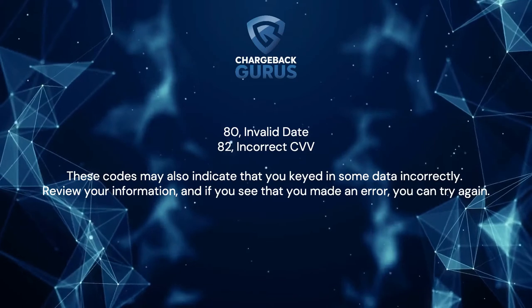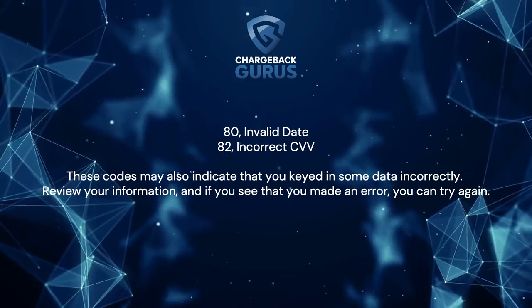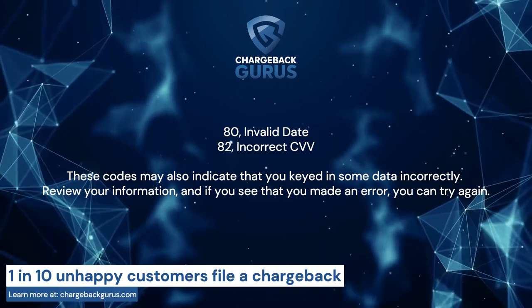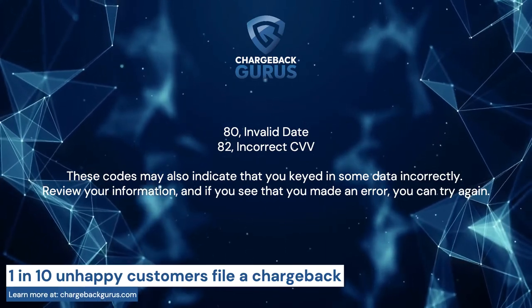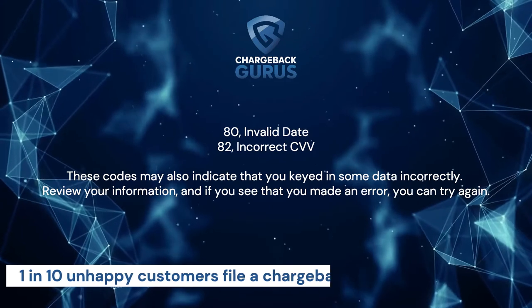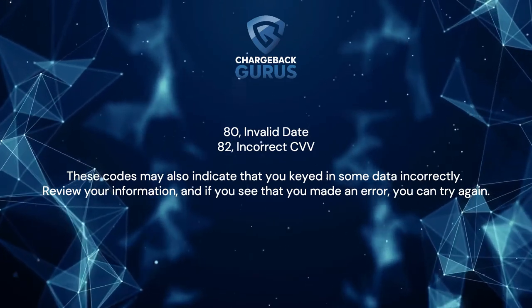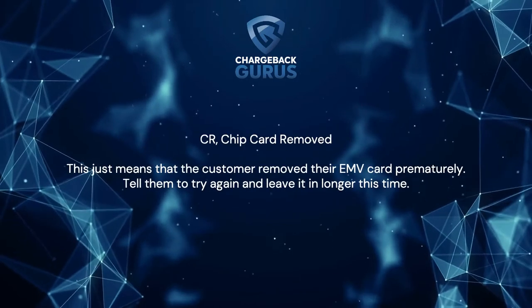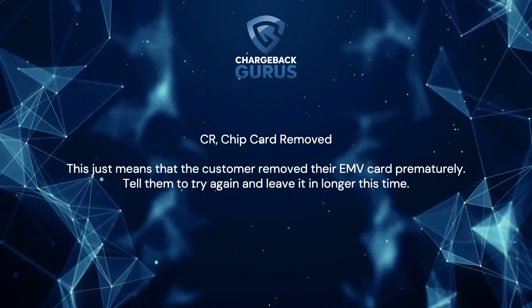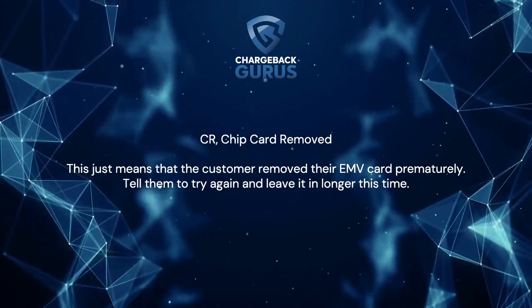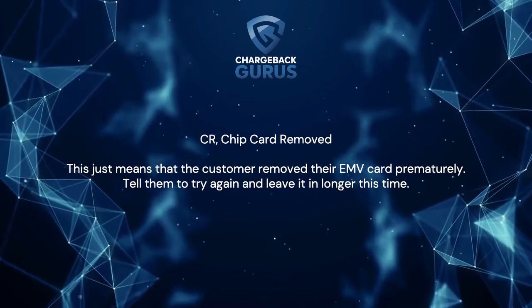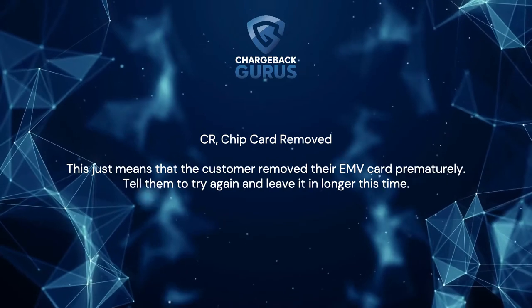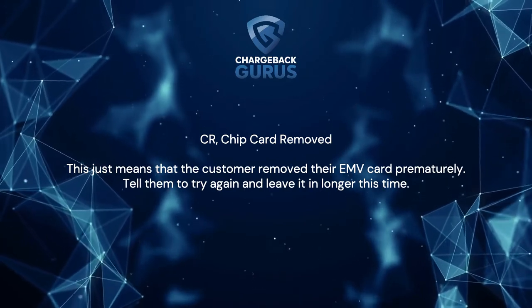Code 80 — Invalid date. Code 82 — Incorrect CVV. These codes may also indicate that you keyed in some data incorrectly; review your information and, if you see that you made an error, you can try again. Code CR — Chip Card Removed. This just means that the customer removed their EMV card prematurely. Tell them to try again and leave it in longer this time.